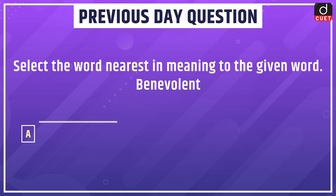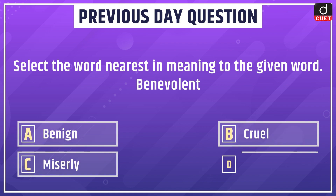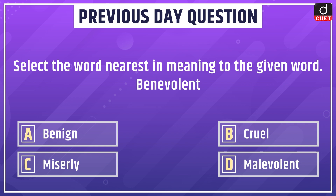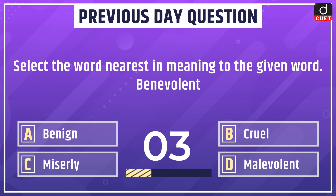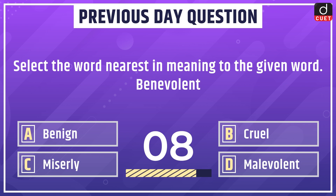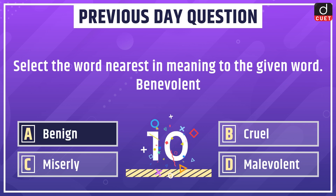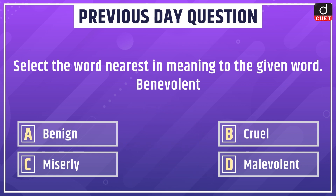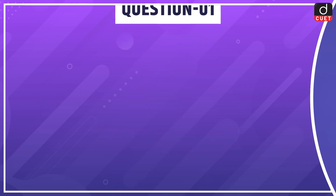Hello everyone, welcome to the CUET General English program. Let's begin with the previous day's question. The question was: select the word nearest in meaning to the given word 'benevolent' — benign, cruel, miserly, or malevolent. The correct answer is option A: benign.